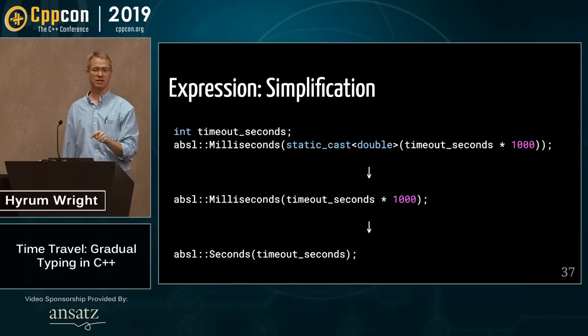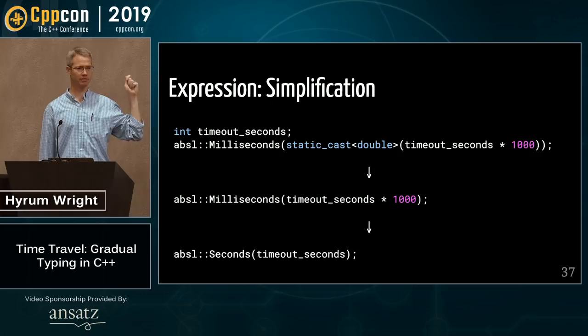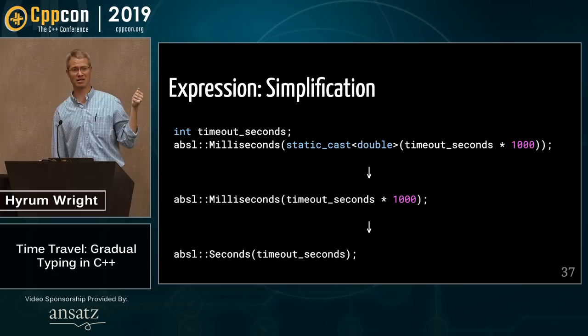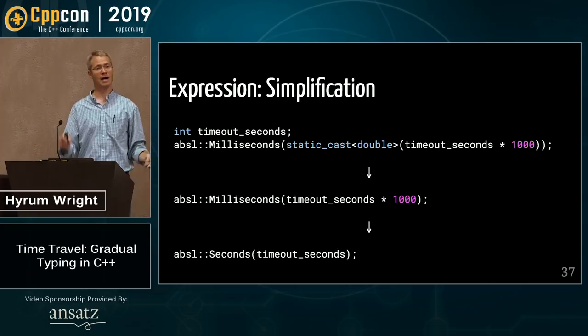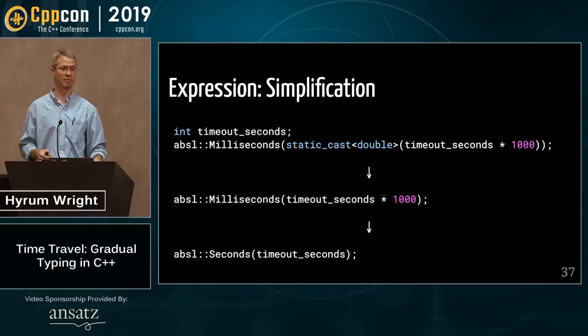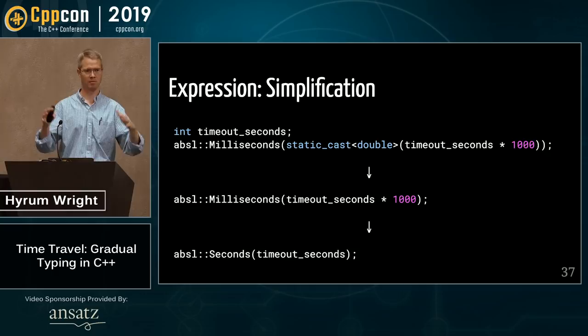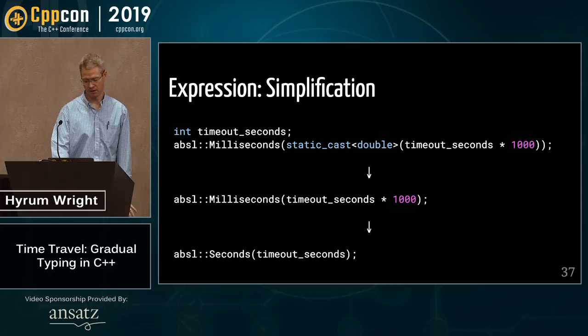These are implemented as clang-tidy checks that run at code review time. When an engineer types one of these patterns into a change, the tool runs at code review and says 'you should have typed this instead' — they press a button and it updates their code. Some more complex changes do need to be committed separately because of how our pipelines work, but the expression simplifications do not.